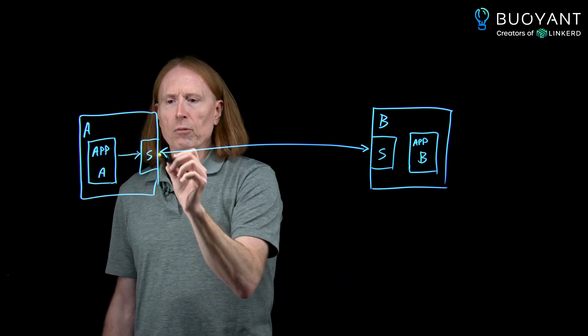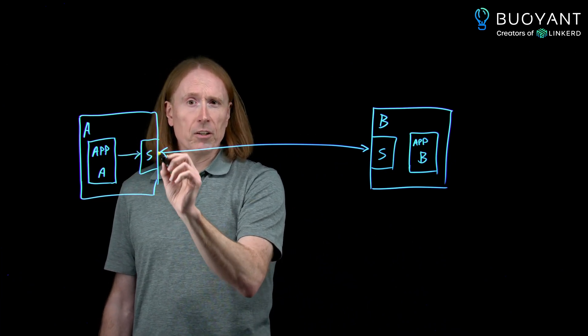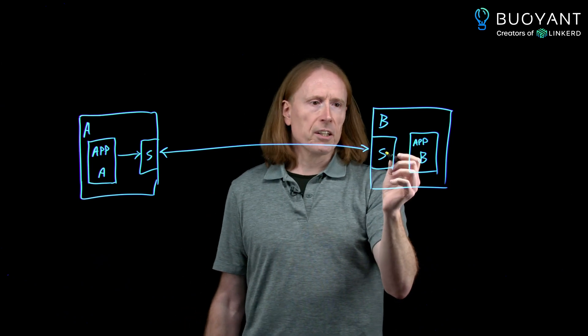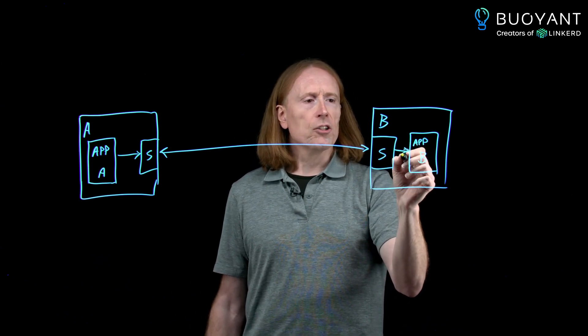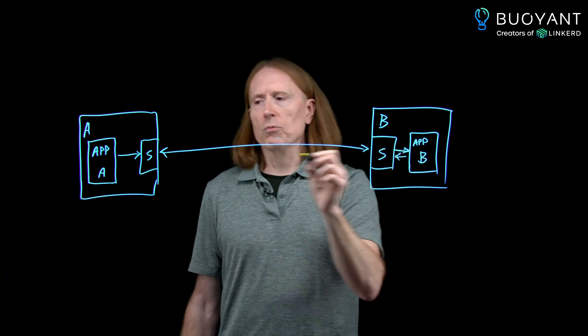So the application over here will make a request. It will actually get intercepted and go to the sidecar, which will then send it to this sidecar, which will forward it to the application, and then at some point the response will come back.